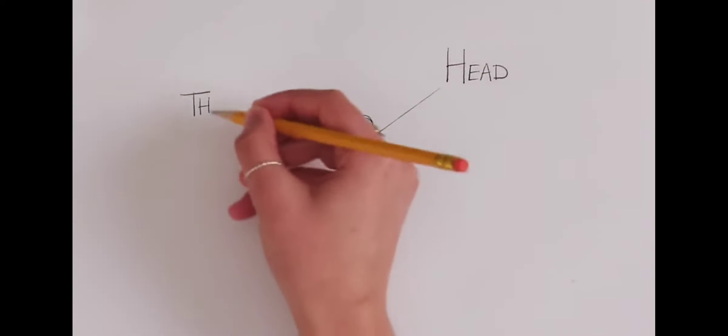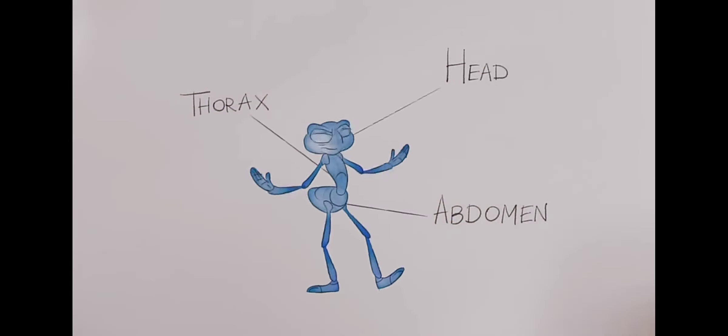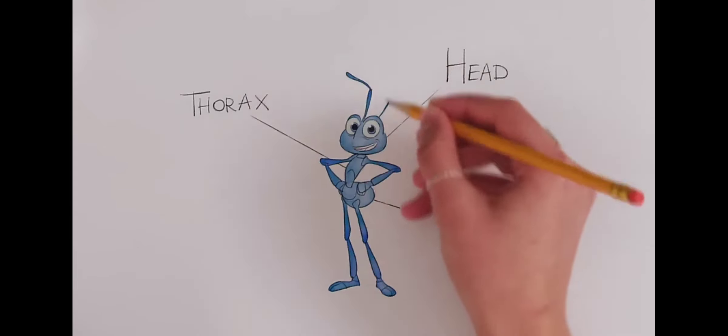So cute. Their anatomy consists of the head, thorax, and abdomen. All parts accounted for. Oops, you forgot my antennae. Ah, those are important.